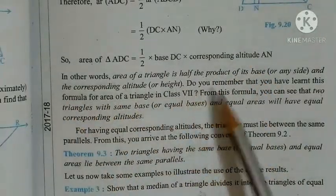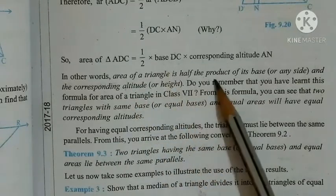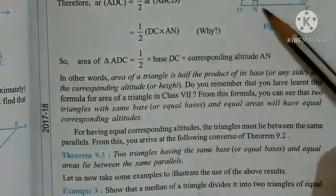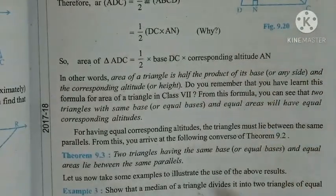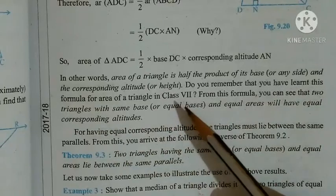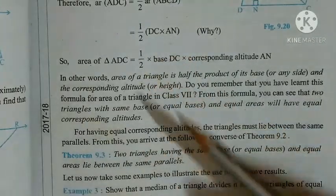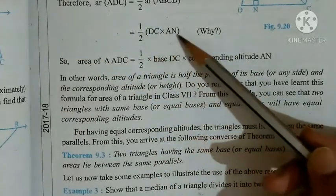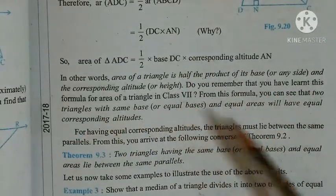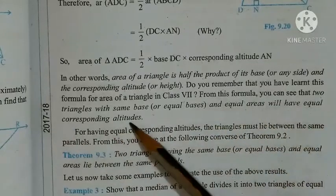In other words, area of a triangle is half the product of its base and the corresponding altitude. Area of triangle joh hai, woh kiske equal hooga, half of the product of its base and the corresponding altitude. Do you remember that you have learned this formula for area of triangle in class 7th? From this formula, you can see that two triangles with same base or equal bases and equal areas will have equal corresponding altitudes.